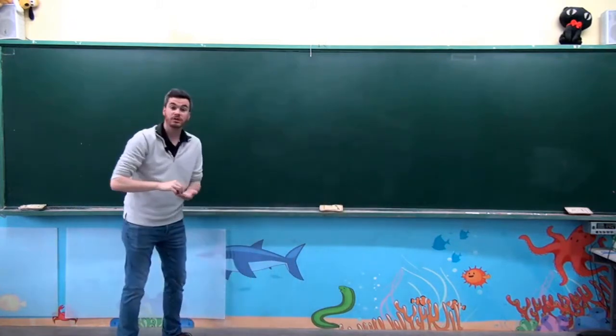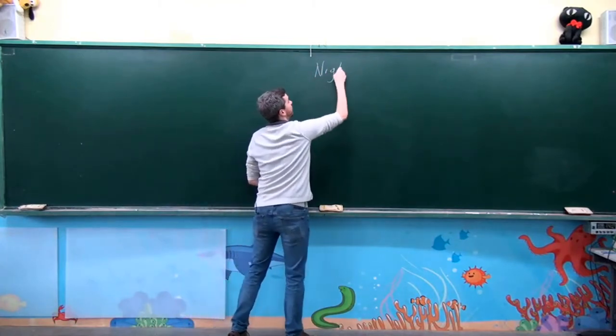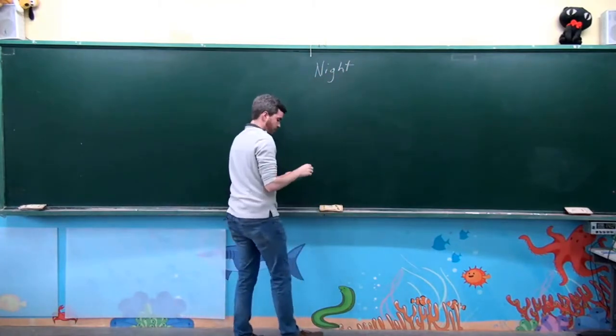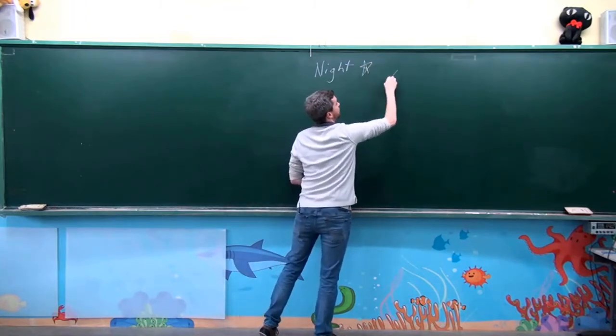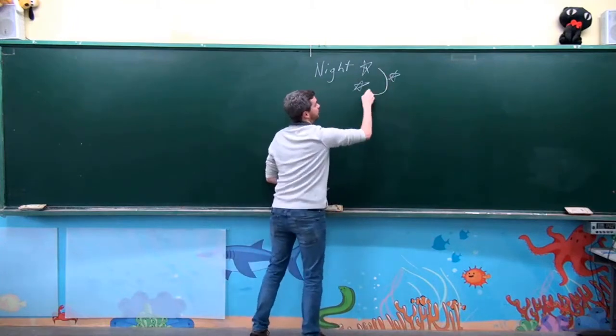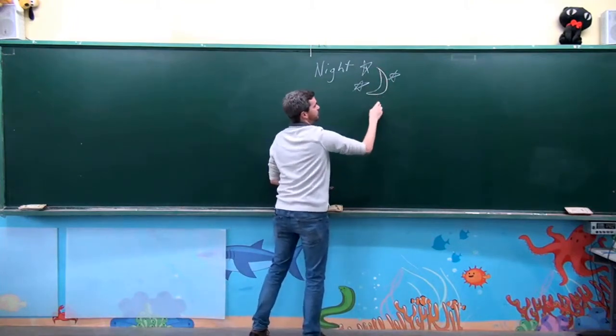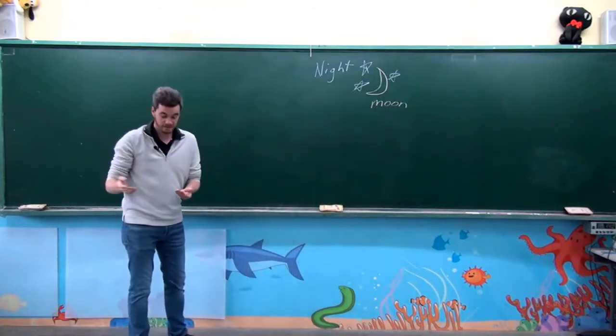The story starts at night. At night, there are some stars that come out. And there is a moon. This is the moon.